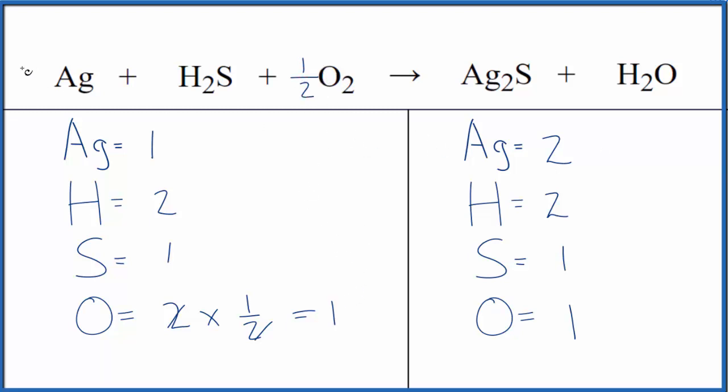Then for the silvers, I just put a two here. One times two, that equals two. And we're done. This equation is balanced. These are the correct ratios.